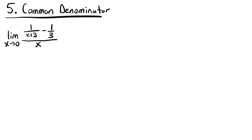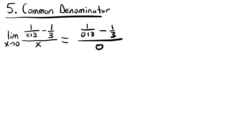Finally, we have the common denominator method. The example is the limit as x approaches 0 of (1 over x plus 3 minus 1 third), all divided by x. Plugging in 0 gives us 1 third minus 1 third on top over 0 — zero over zero, our indeterminate form again. We have to manipulate this function.